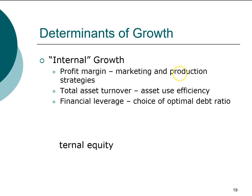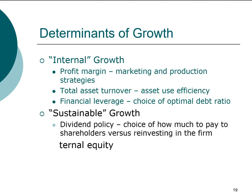If the firm uses a very lean manufacturing process it can have a higher profit margin, or it can have a very successful marketing strategy and charge a higher premium for its product, again increasing profit margin. Second is total asset turnover — how efficiently the company uses its assets — and financial leverage. Notice that these first three components make up the ROE, return on equity, also known as the DuPont identity.